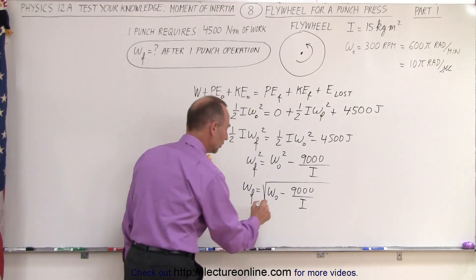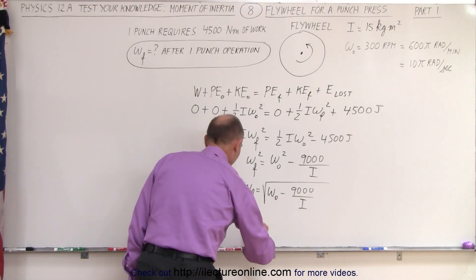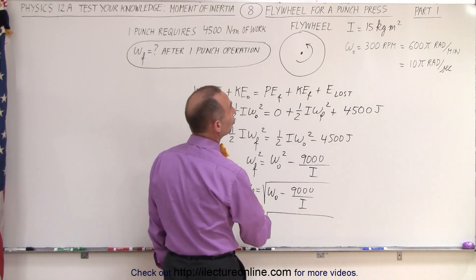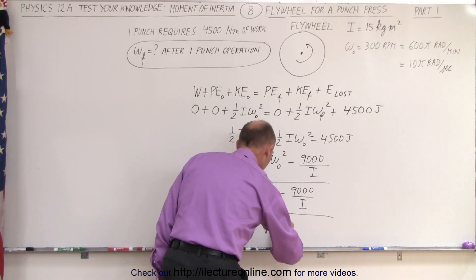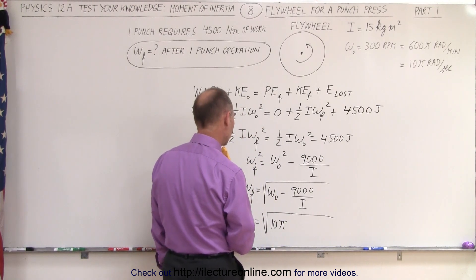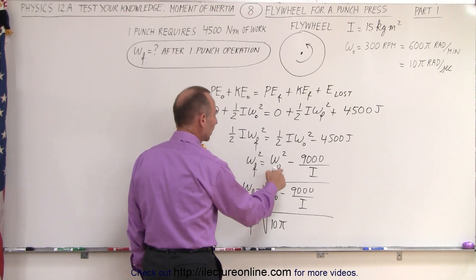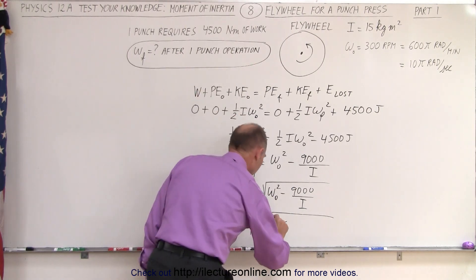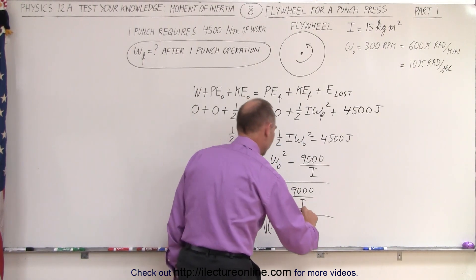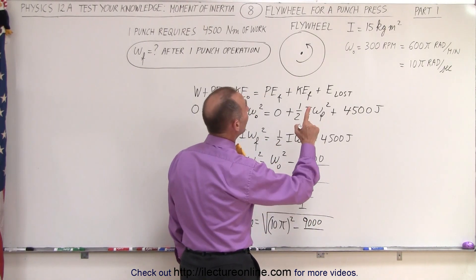So now let's go ahead and plug in what these are. And of course, we want to use standard units. So in this case, ω final is equal to the square root of ω initial, which is 10π radians per second, so 10π. And you know what? I think what I should do is put a square there, because we have ω final squared equals ω initial squared, so I forgot to square. So here we need to square that, and that would be minus 9,000 divided by I, so that would be 9,000 divided by I, which in this case is 15.